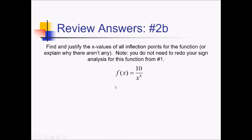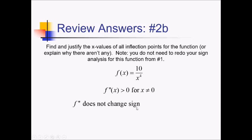For this problem, we're finding and justifying x values of inflection points for 10 over x to the fourth — the function from number 1, part b. We need to figure out if f double prime changes sign anywhere, and also if the function exists at those places. We saw that f double prime is positive everywhere except x equals zero, where it's undefined. Since f double prime is not changing signs anywhere, we conclude it has no inflection points.